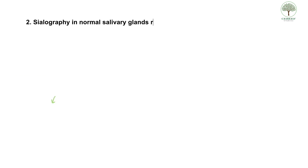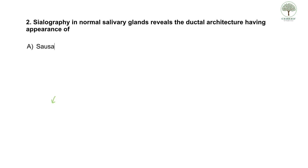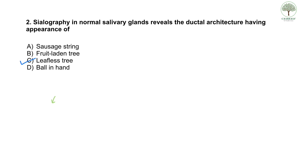The next question: sialography in a normal salivary gland reveals the ductal architecture having the appearance of — options are: A) sausage string appearance, B) fruit laden appearance, C) leafless tree, and D) ball in hand. The correct answer is leafless tree.